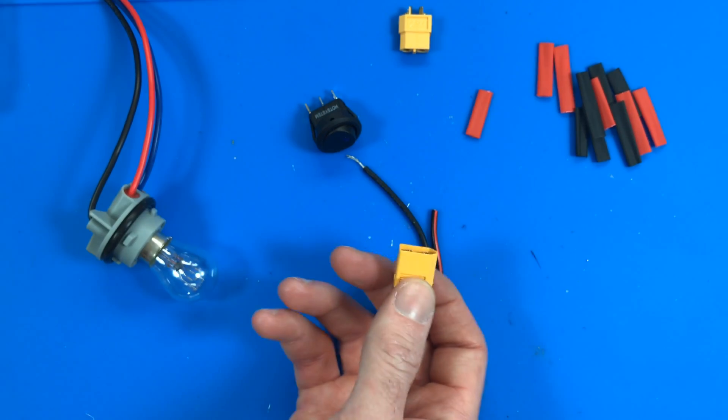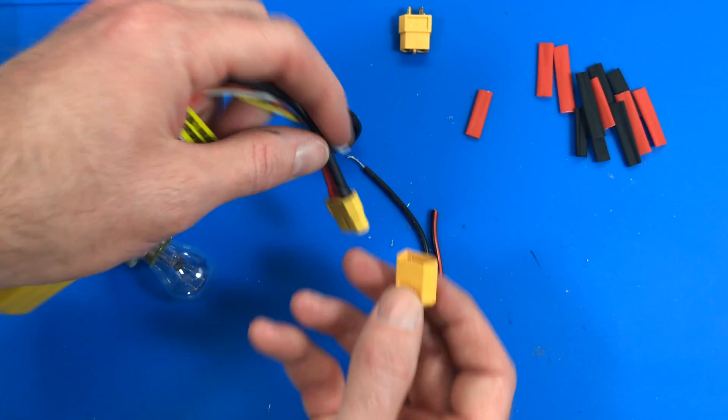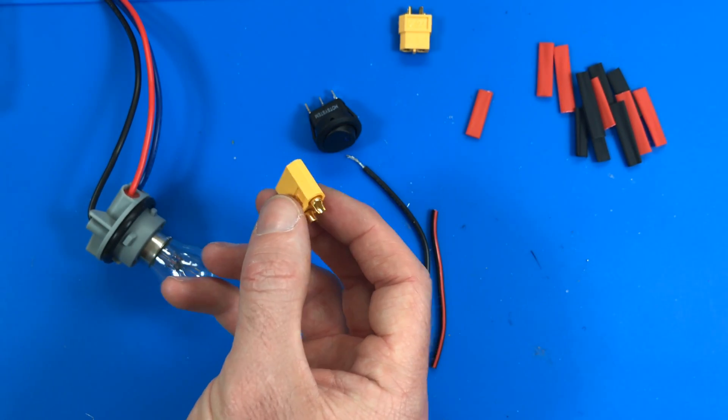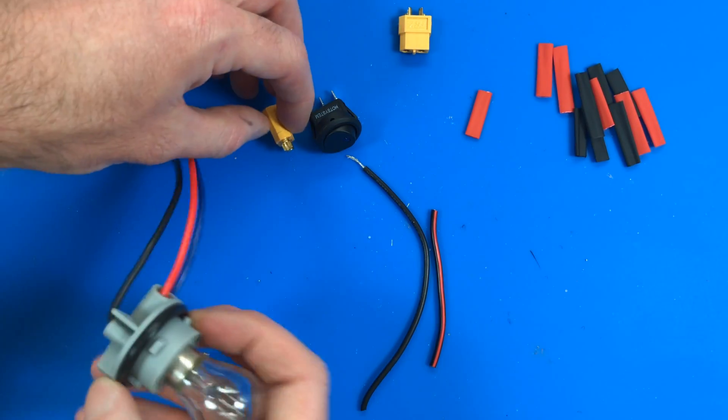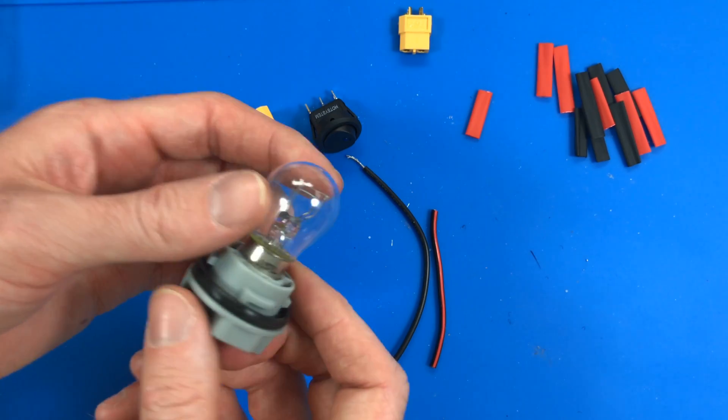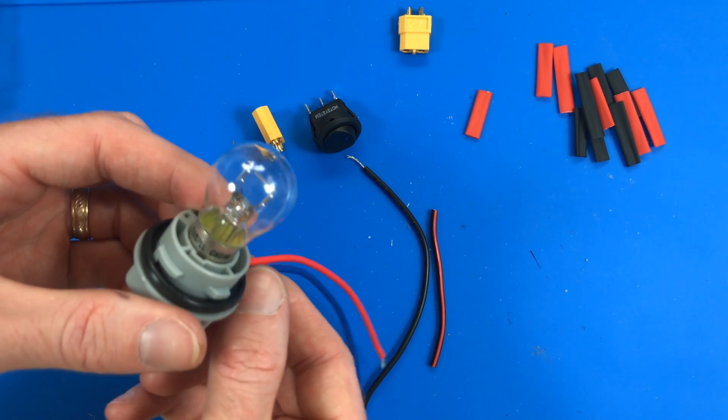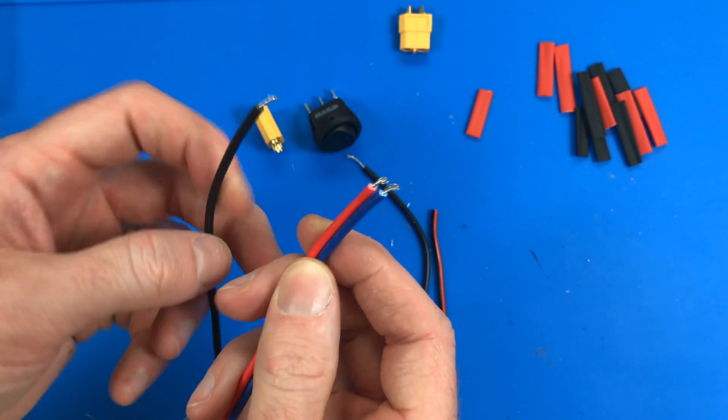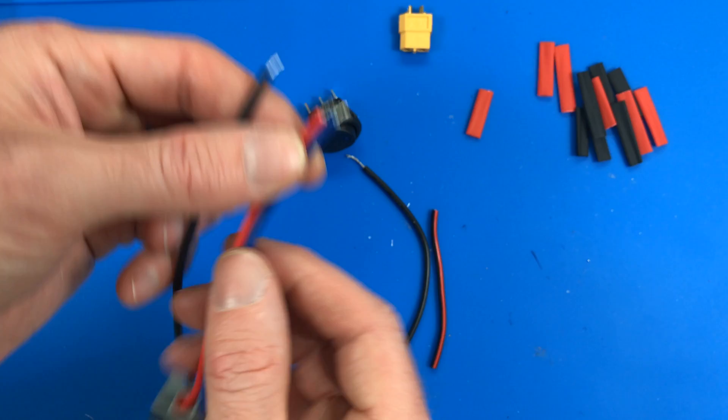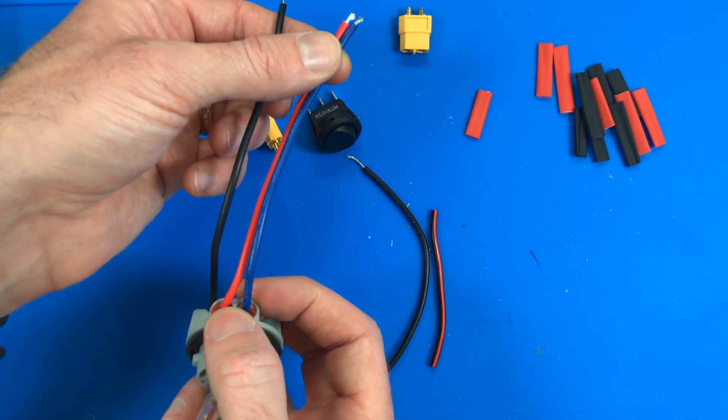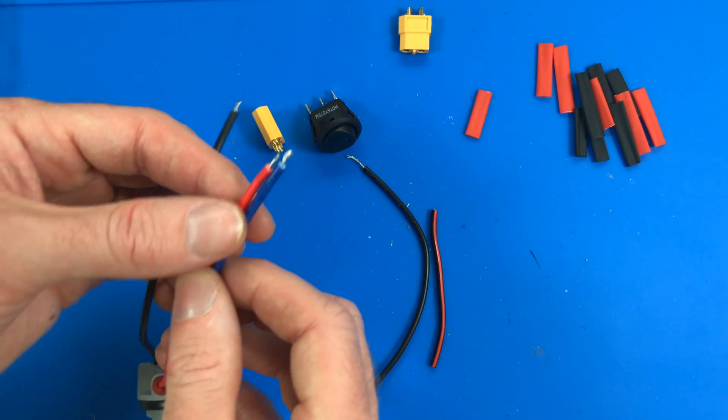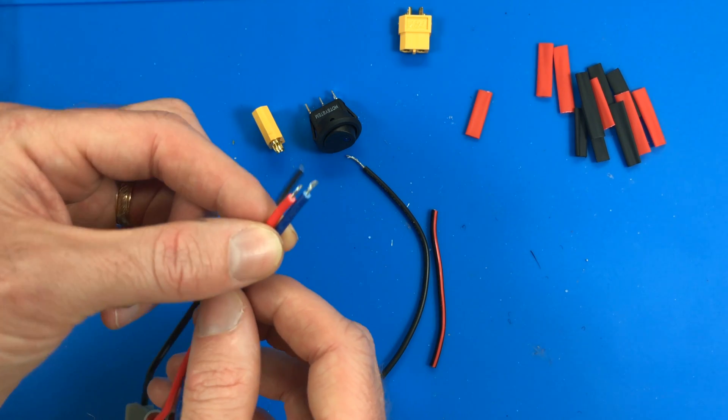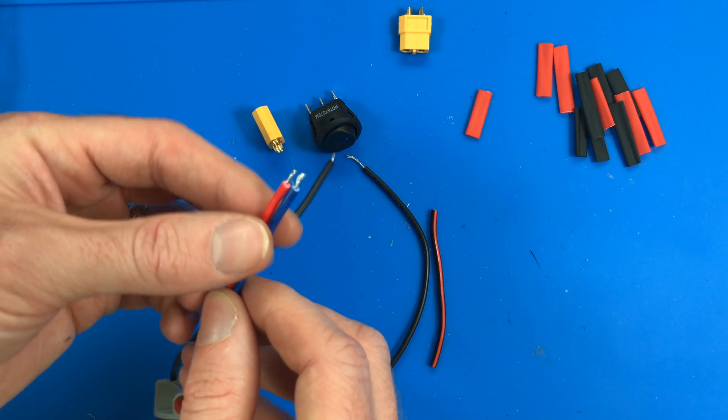We're going to start with the battery connector on this side. I've got my battery here and this will connect into this port. So this is basically the beginning of the circuit. With these bulbs, these bulbs are made for car headlights and they have high and low outputs on them. Because of that, there's actually three wires here. And in order to make this work, we want to combine the two red and blue wires on this port.